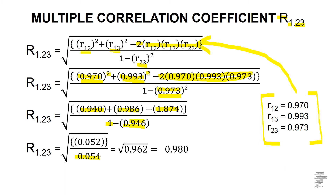When 1.874 is subtracted from the additive component of 0.940 and 0.986, we are left with 0.052. Dividing 0.052 by 0.054 gives 0.962 under the square root. The square root of 0.962 is equivalent to 0.980, which is the multiple correlation coefficient R1.23.